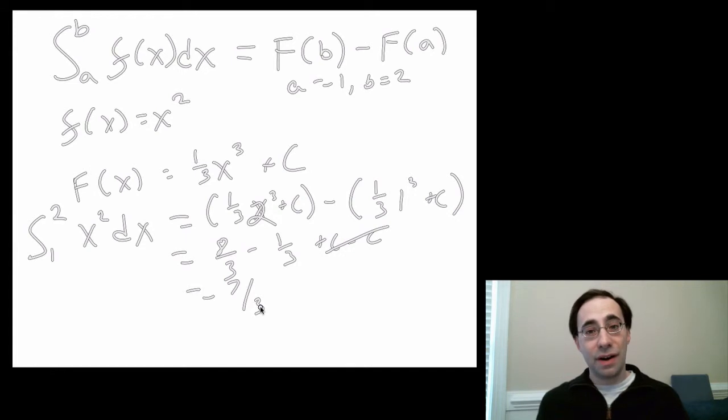So this equals 7/3. And that's it. We just computed the area under a parabola in about 30 seconds. So this is the power of calculus. We can deal with things like this very quickly once we get a handle on what the antiderivative is.